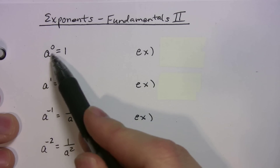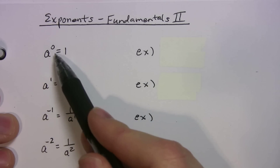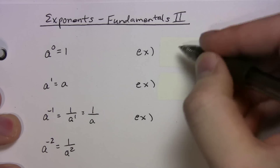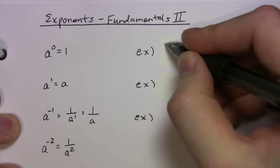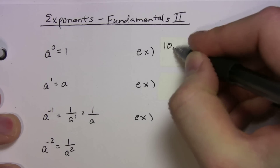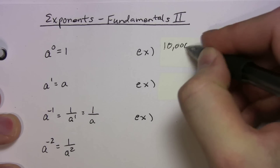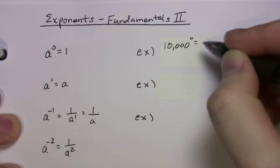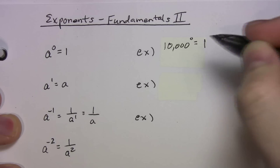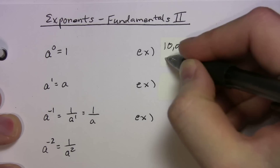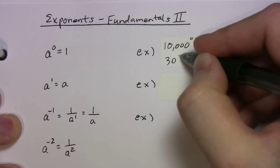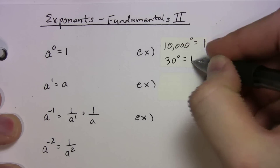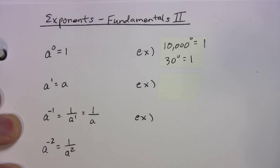Anytime you raise a number to the zero power, you get one back. Let me give you some examples. Ten thousand to the zero power is just going to give you one. Thirty to the zero power is just going to give you one.